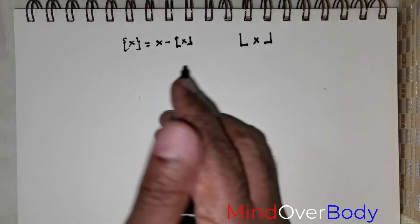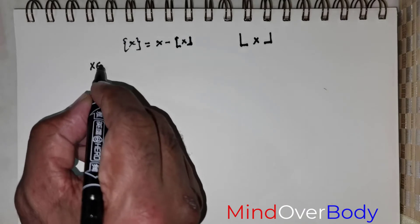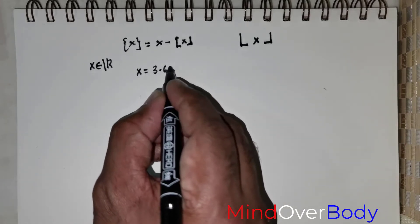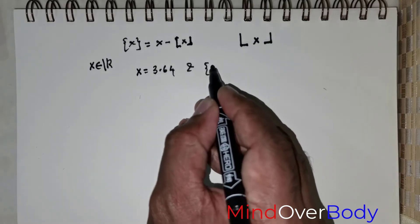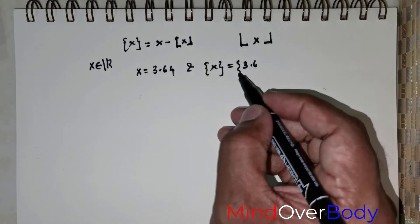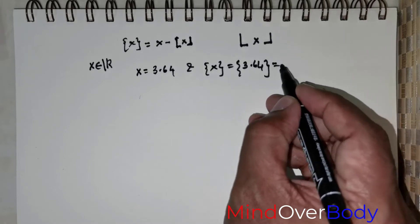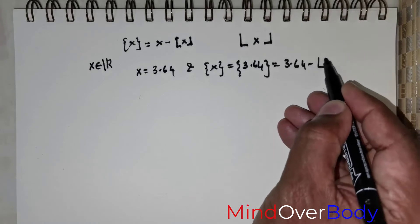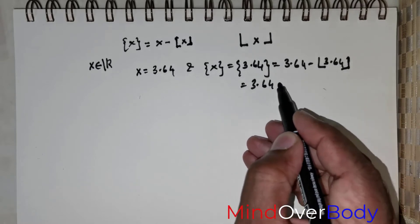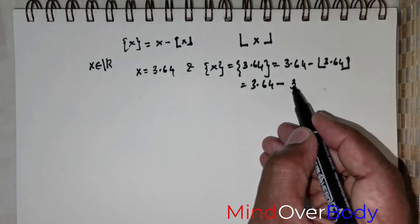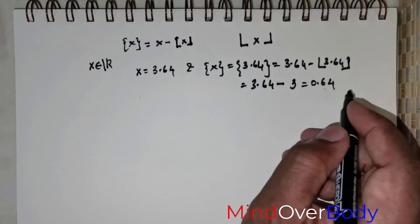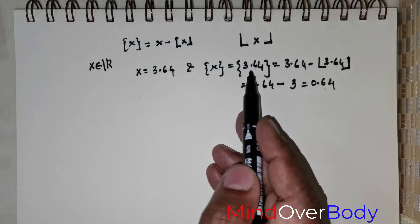It is important to observe that x is an element of all real numbers. Now imagine you are taking x to be 3.64 and you want to find the fractional part of x. In this case, fractional part of 3.64 equals by formula 3.64 minus the floor of 3.64, which is 3. So 3.64 minus 3 equals 0.64. That is the fractional part of 3.64.